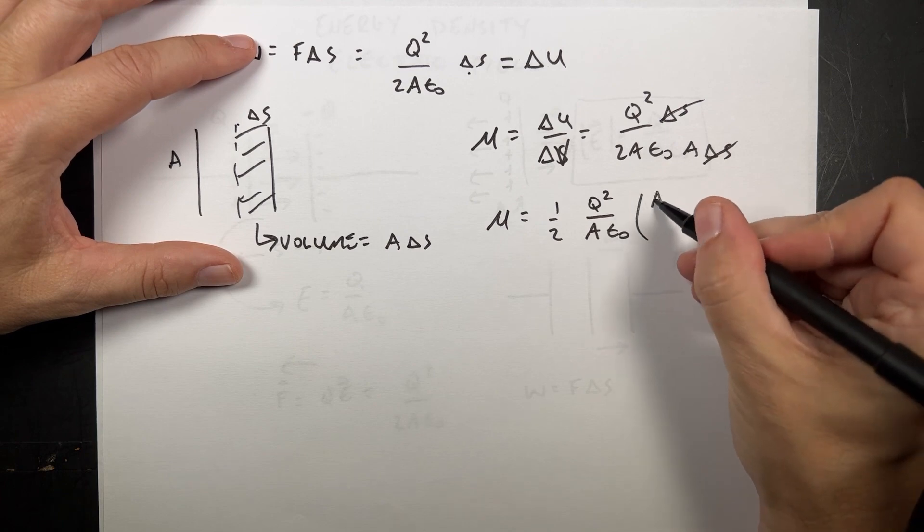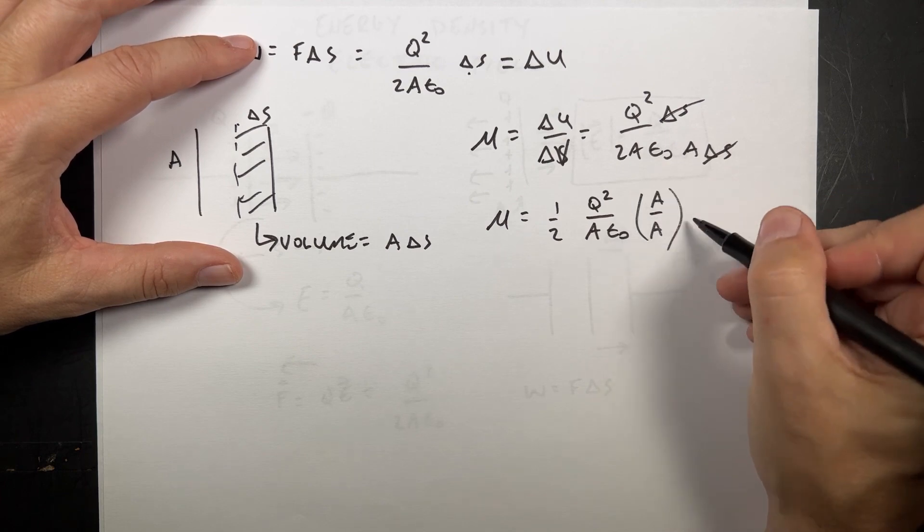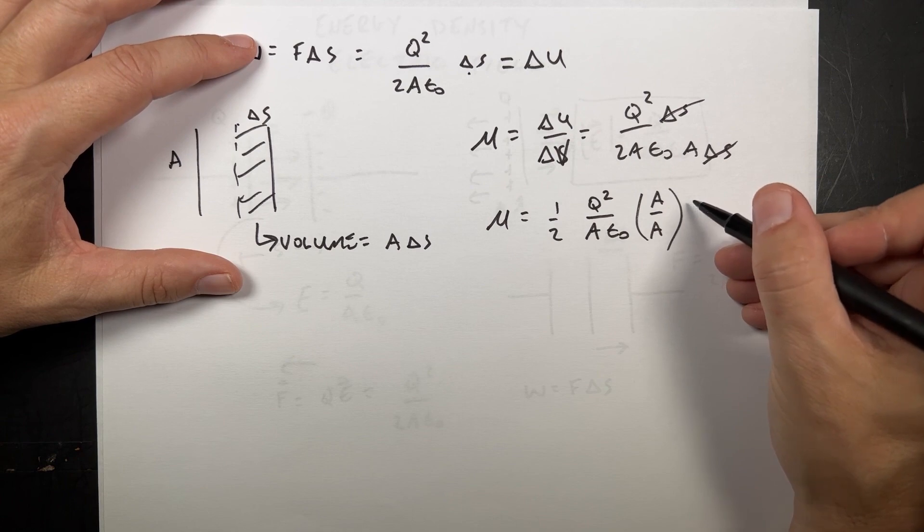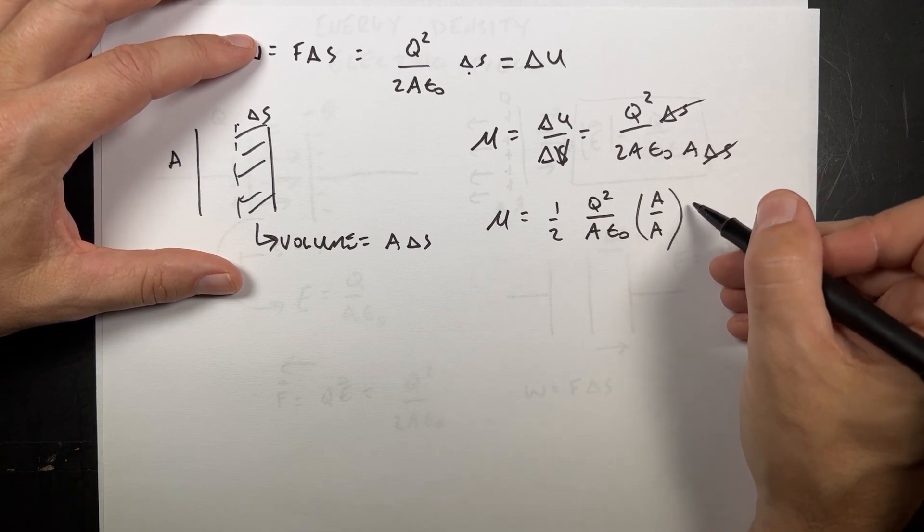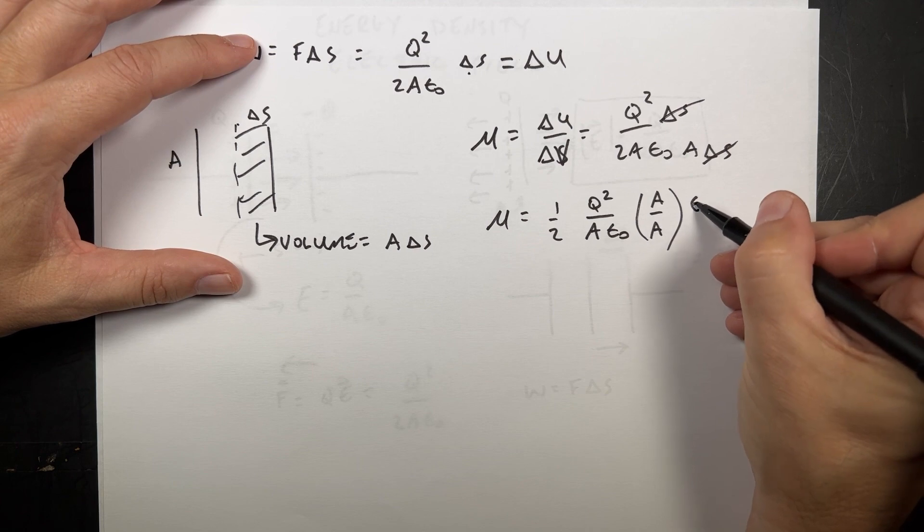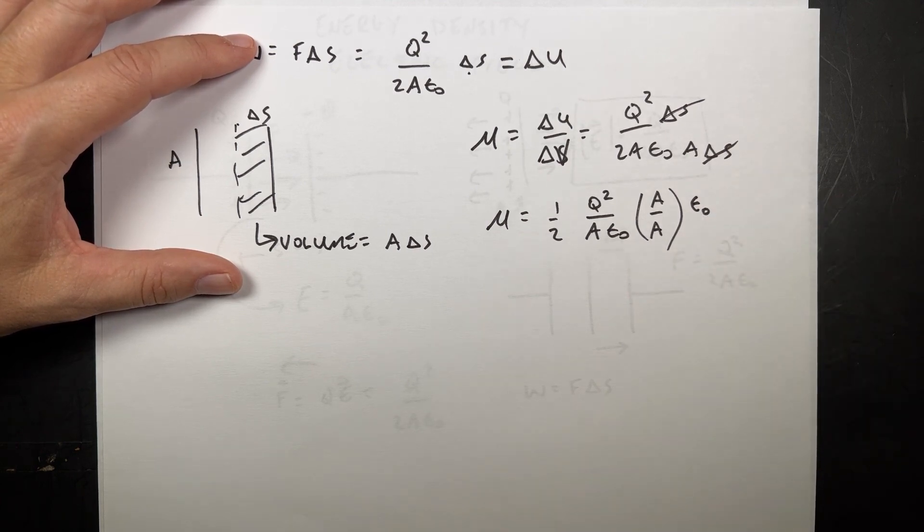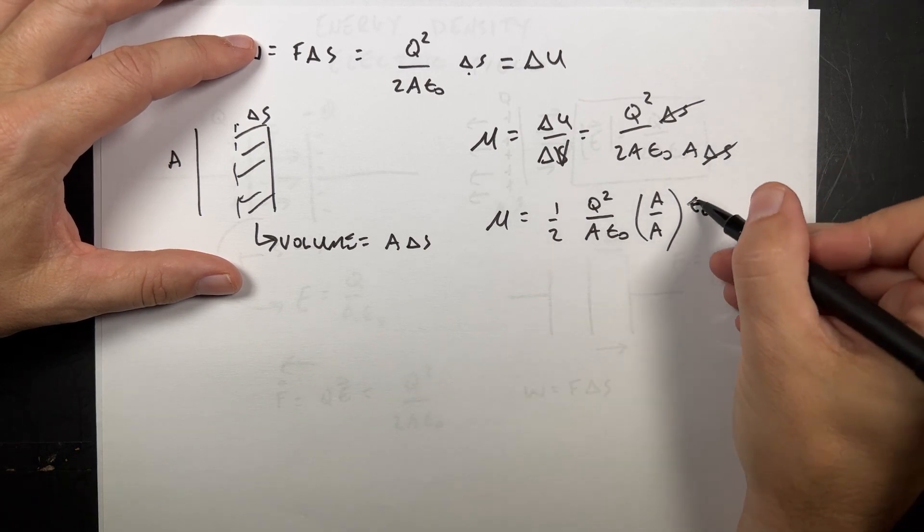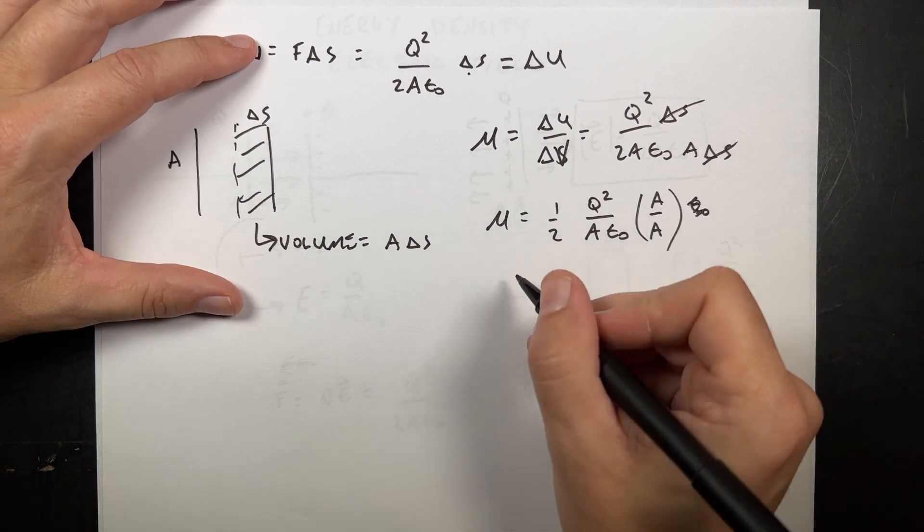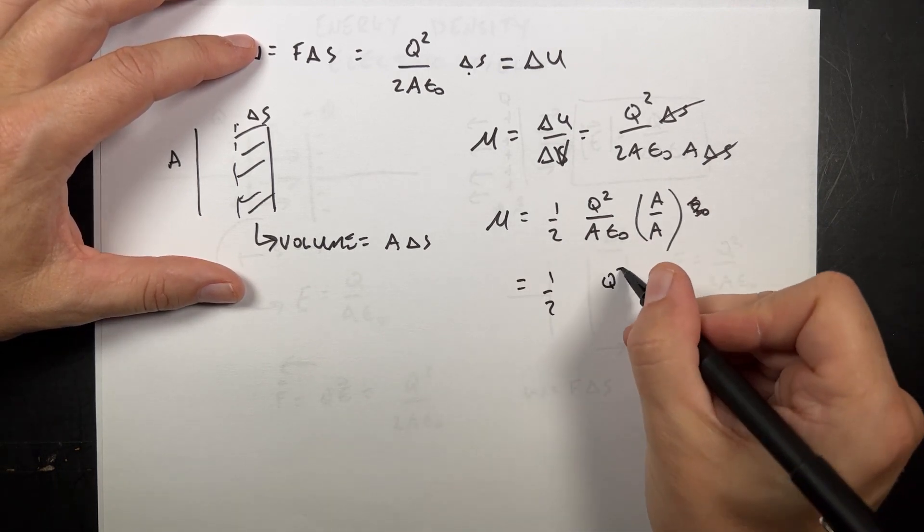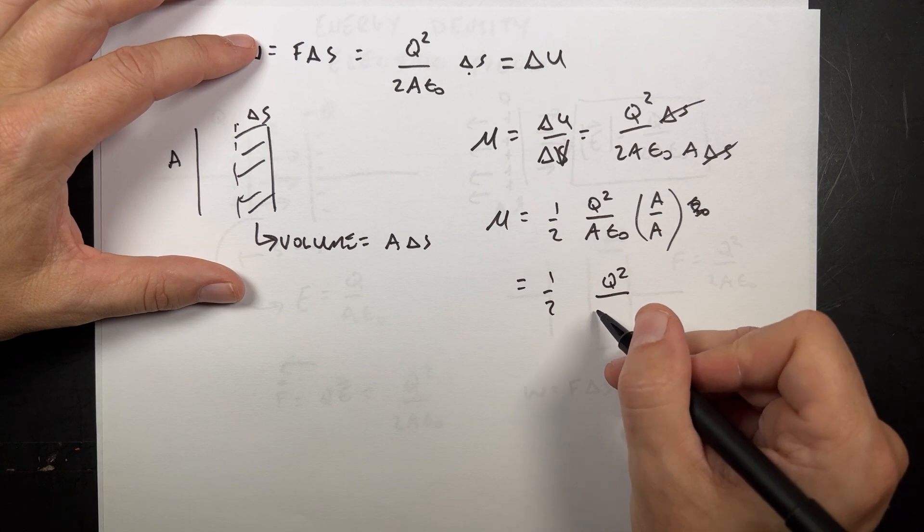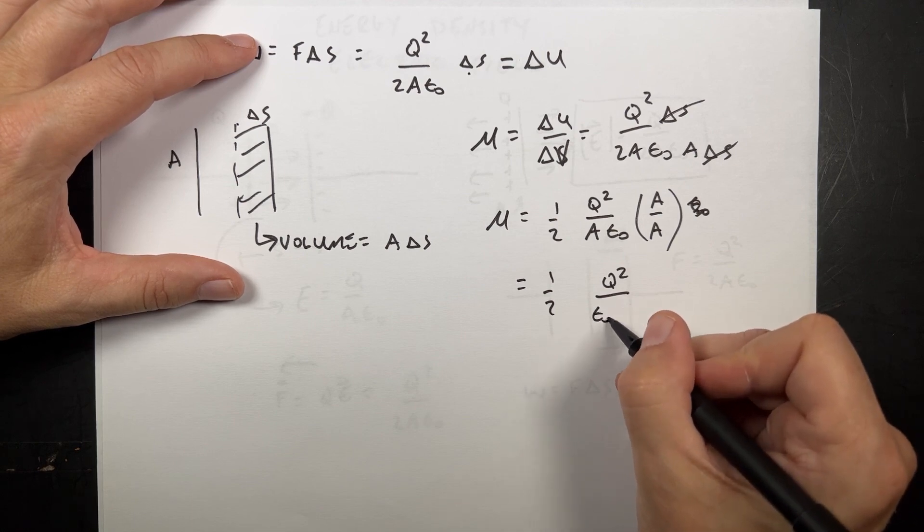Now I'm going to multiply that by A over A. You can do that. And I'm going to multiply that by epsilon squared. Is that right? No. Epsilon. Well, if I multiply that by A over A, I get one half Q squared over epsilon naught A squared.